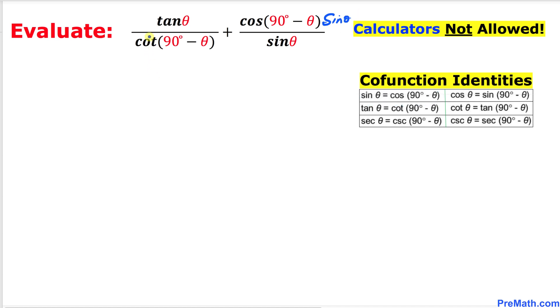Now let's focus on the denominator, cotangent of (90° - θ). We can see that cotangent of (90° - θ) is same as tangent θ because they are co-functions. So therefore, I'm going to replace this cotangent of (90° - θ) by tangent of θ.